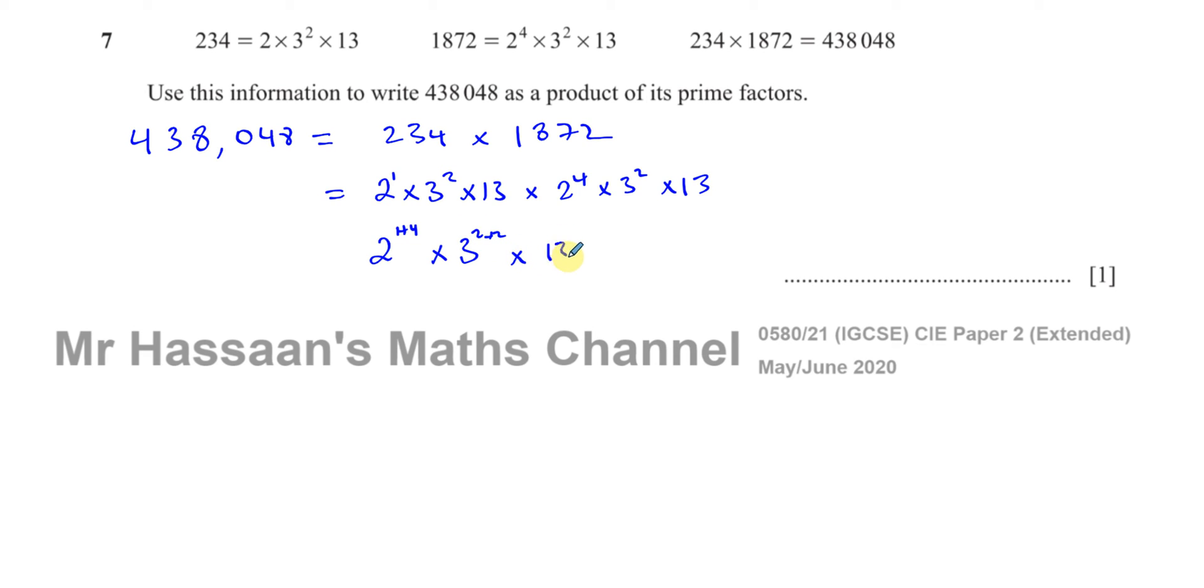And you've got 13 times 13 to the power of 1, which is 13 squared, basically. So you add the powers. You have 2 to the power of 5, times 3 to the power of 4, times 13 to the power of 2. So that's now the answer expressing this as a product of its prime factors.